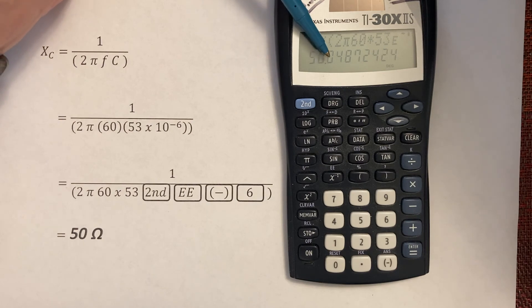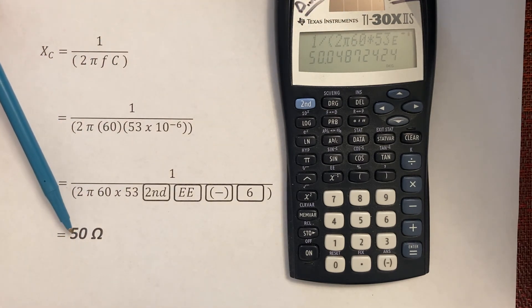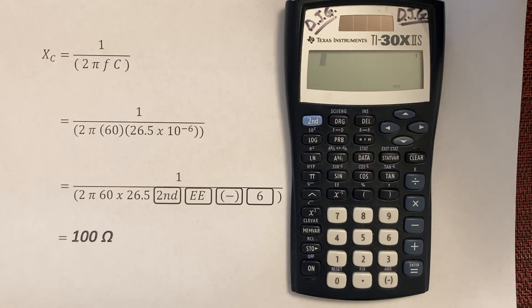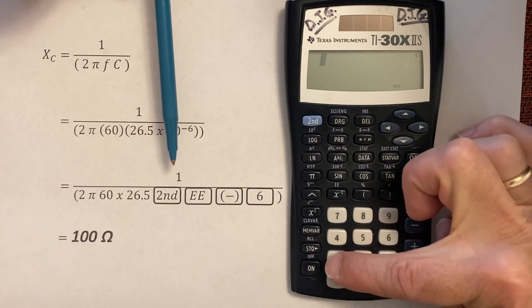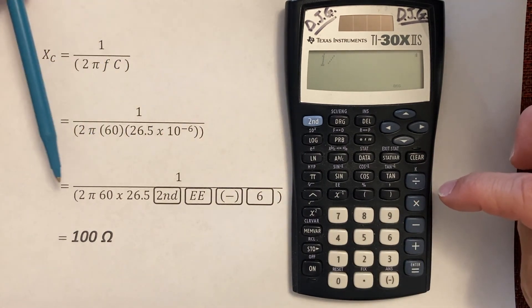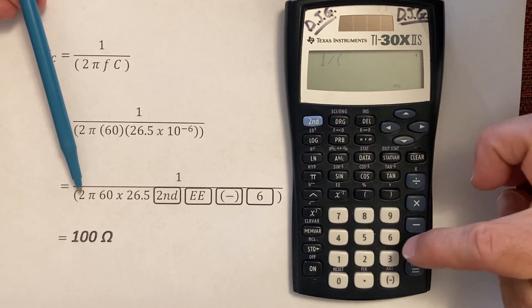And I get 50.04 ohms, round it to 50 ohms. Let's enter one more just to make sure we have the procedure down. Again, our formula: capacitive reactance, one divided by the full quantity 2π frequency capacitance. Capacitance in farads: 26.5 microfarads, very small number, so that's 26.5 times 10 to the negative 6 farads.